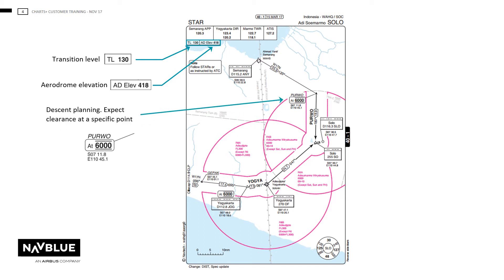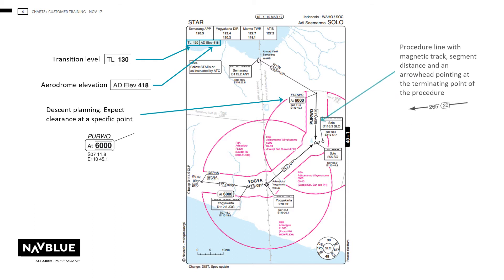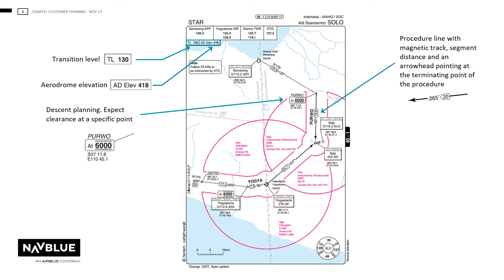Here we are showing an altitude at a waypoint with coordinates, and a procedure line with a magnetic track and a segment distance with a terminating arrow.